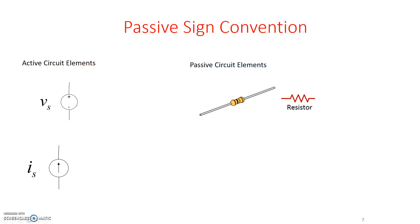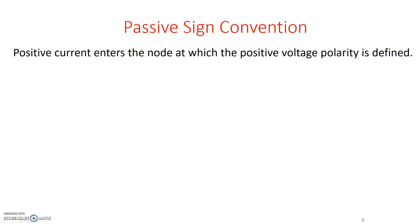Passive sign convention basically says that for any passive element, the positive current enters the node at which the positive voltage polarity is defined. For example, let's take a look at a passive element called AB, right here.